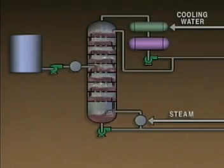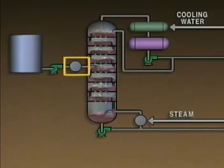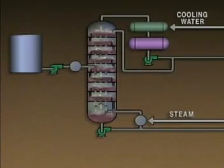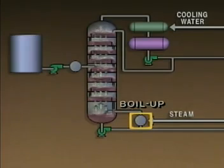In order to maintain the proper temperature gradient, temperatures at critical points in the system must be controlled. Temperatures in a distillation system are typically controlled in three ways. One way is to control the temperature of the feed mixture by using a preheater, which regulates the temperature at the feed point. At the bottom of the tower, temperature is controlled by the amount of heat that is added by the reboiler. This added heat is referred to as boil-up.